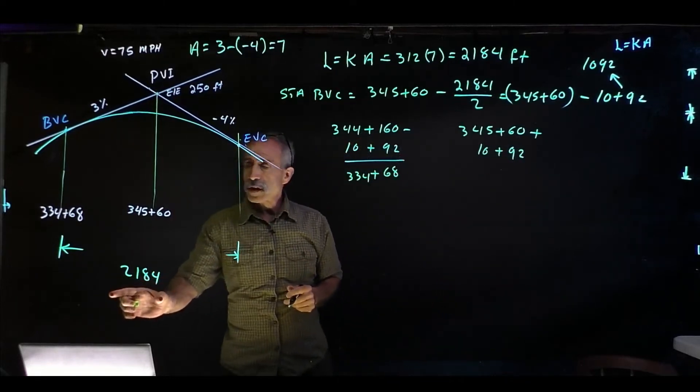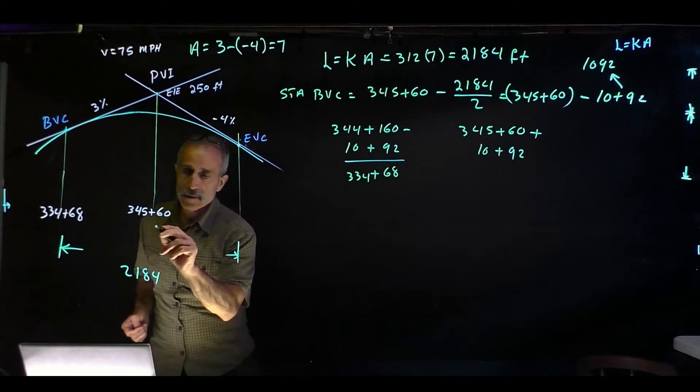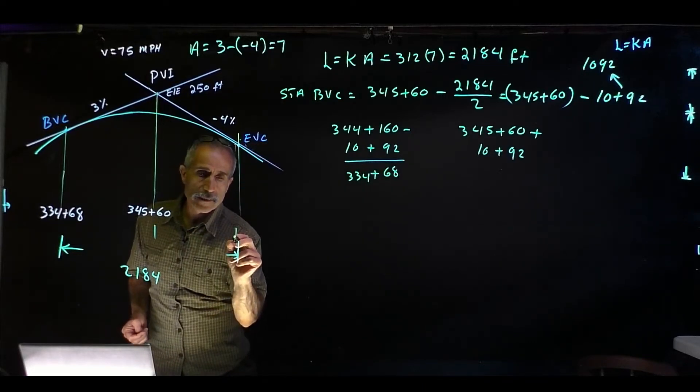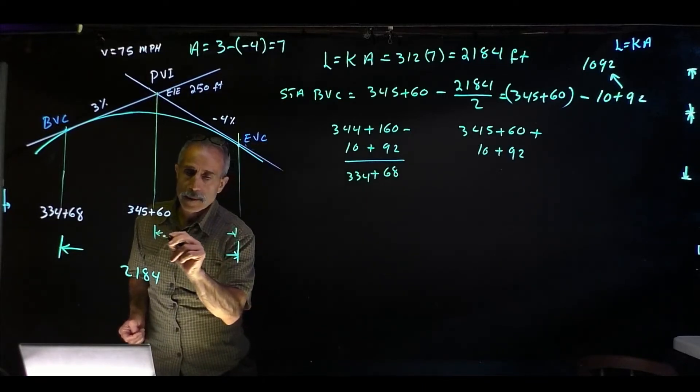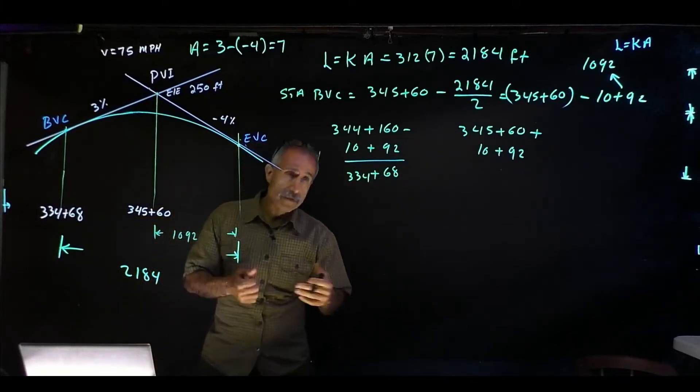So that's going to be 345+60 plus 10+92. Remember, if this is 2184, half of it is 1092, and the other half is 1092, or 10 stations plus 92 feet.